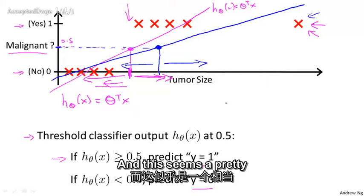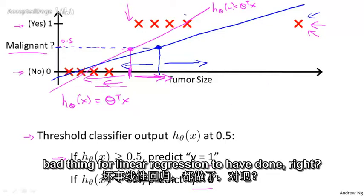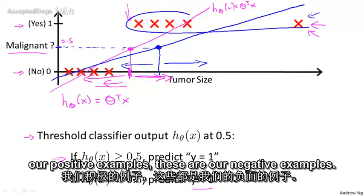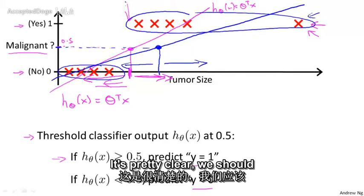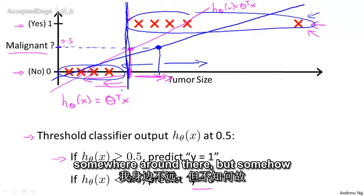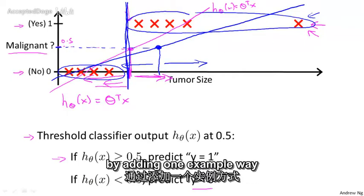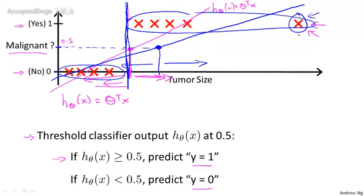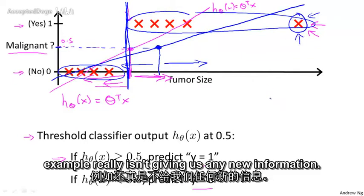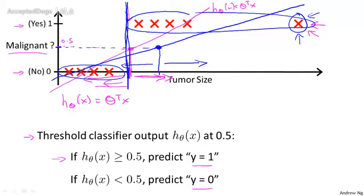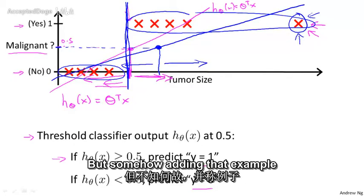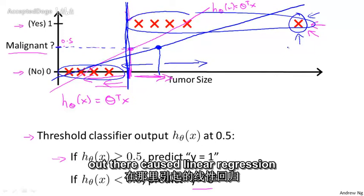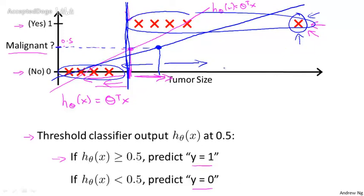And this seems a pretty bad thing for linear regression to have done. Because these are our positive examples, these are our negative examples. It's pretty clear we really should be separating the two classes somewhere around there, but somehow by adding one example way out here to the right, this example really isn't giving us any new information. I mean, it should be no surprise to the learning algorithm that the example way out here turns out to be malignant.